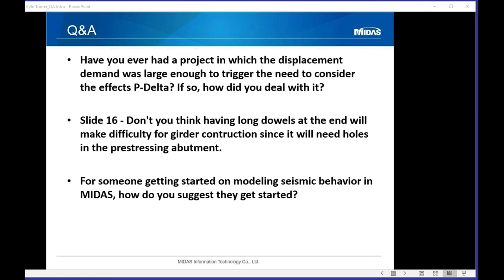Question: Don't long dowels at the ends make girder construction difficult since holes are needed in the prestressing? Answer: Yes, holes have to be cast into the girders during precasting. Those holes must be big enough to accommodate the dowel and the high-strength grout that supports it. But doweling is very common for connecting girders to the diaphragm at the abutment and the bent — it's a tried-and-true method.